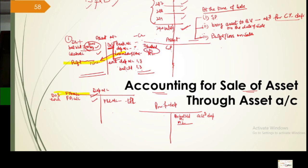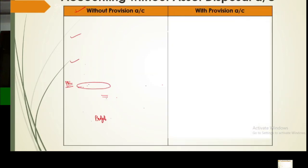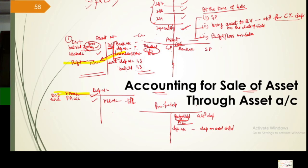When one asset is sold, we must remove it from the business — monetarily its value must leave the books too. Suppose the first asset is being sold: its cost and its accumulated depreciation both must be removed from books, because the asset is now out of the business. On the date of sale, sale is recorded — bank account with selling price. Then to bring asset to book value, current year depreciation is charged — but with provision, depreciation goes into provision account, not asset account.